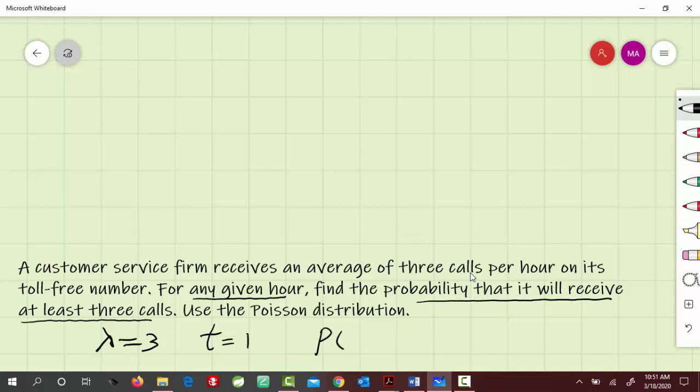That's the probability that x is greater than or equal to 3, which we have to figure out.